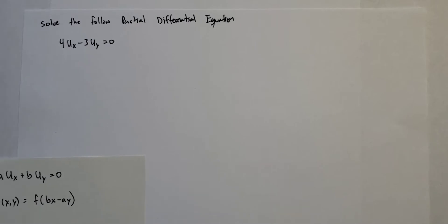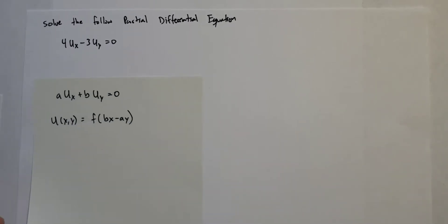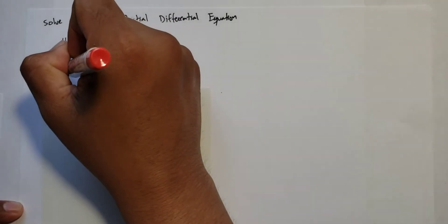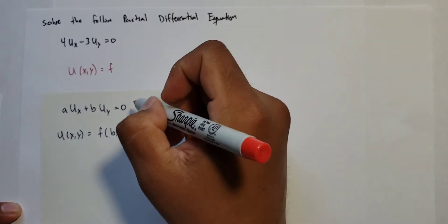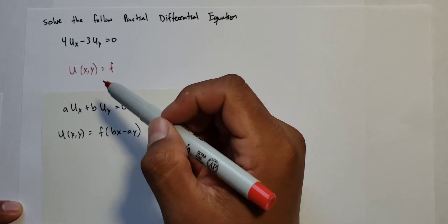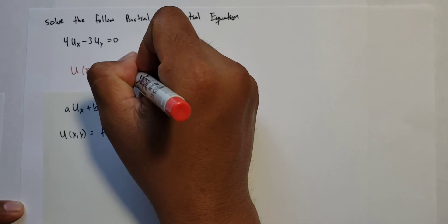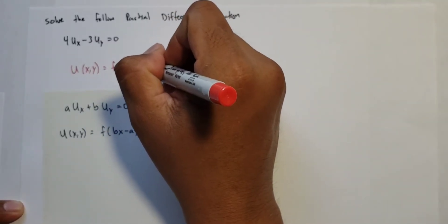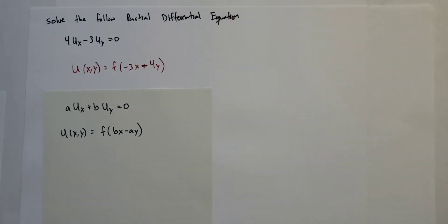So here's the previous example. Instead of doing all that algebra, all you have to do is use this equation. My solution for this PDE is u(x, y) = f of... b in this case would be 3, so minus 3. So it's f of minus 3x minus 4y.